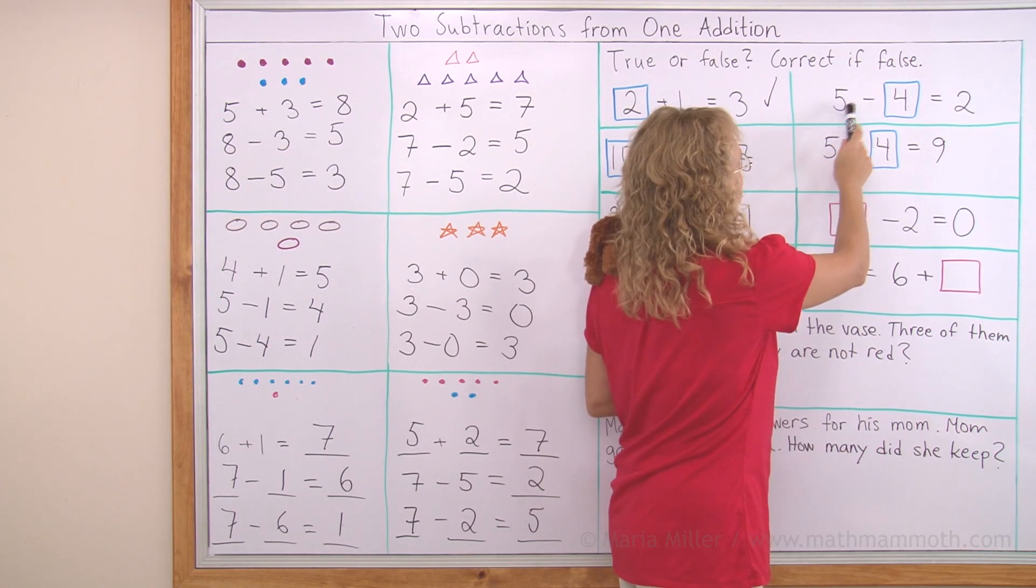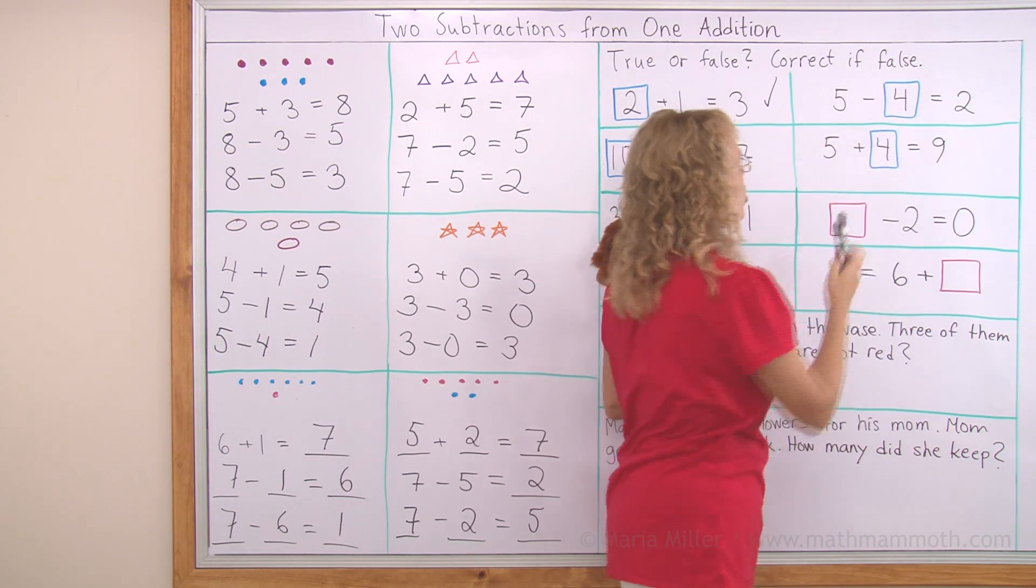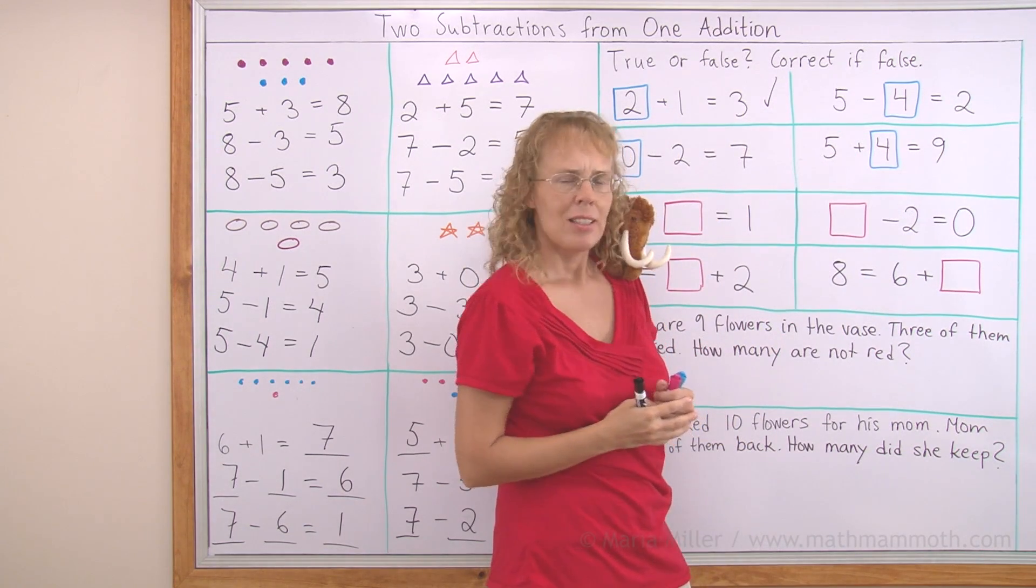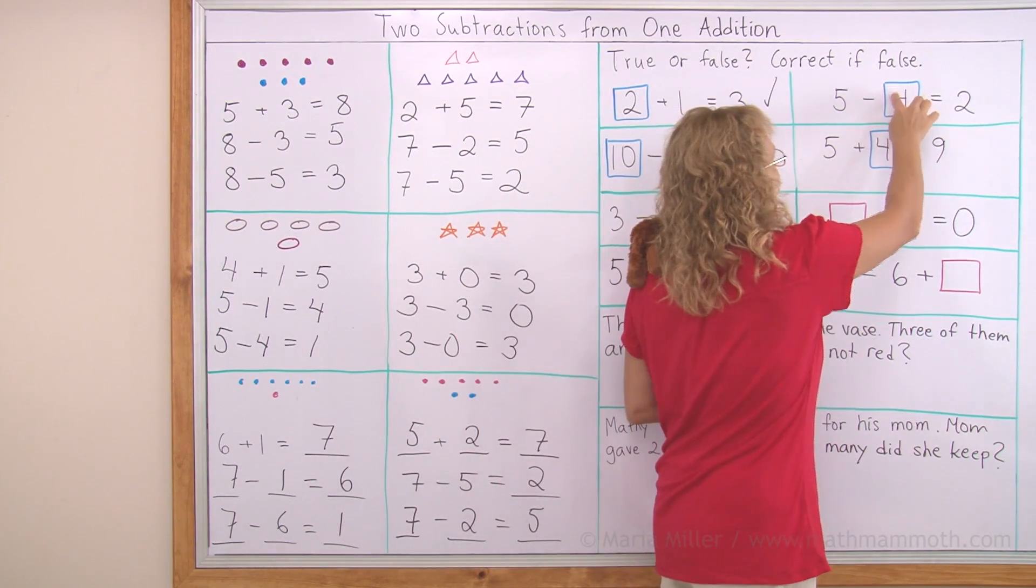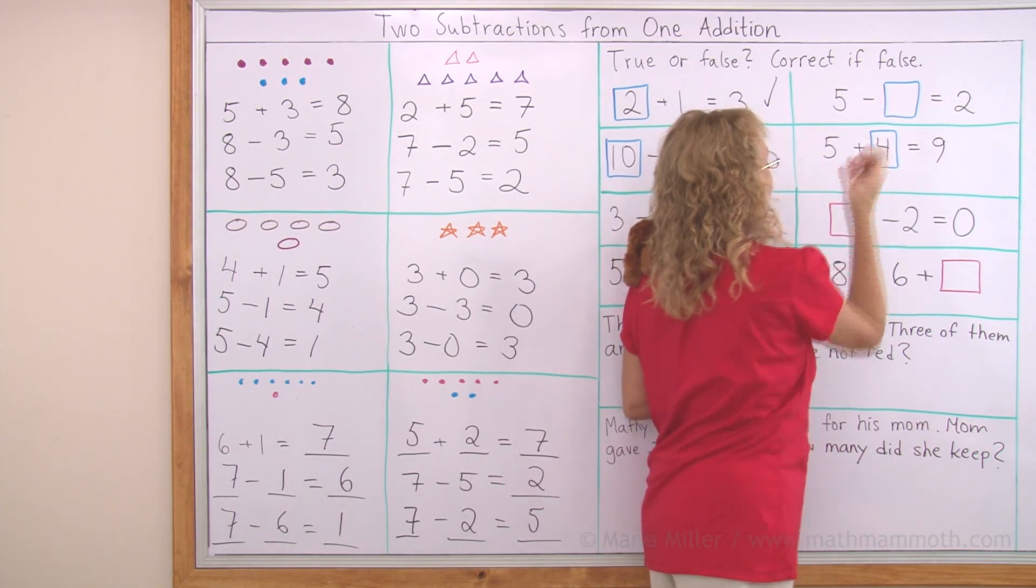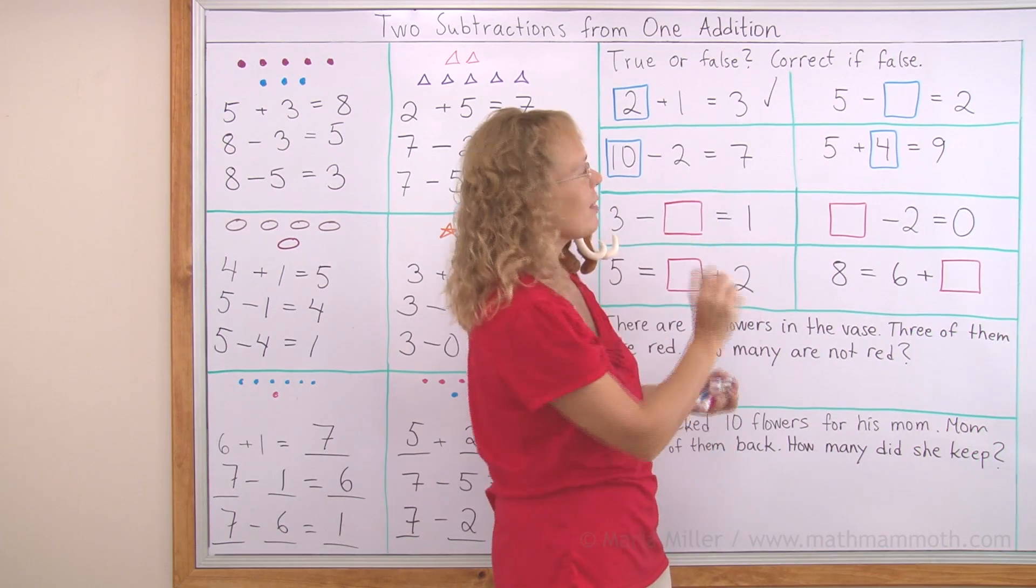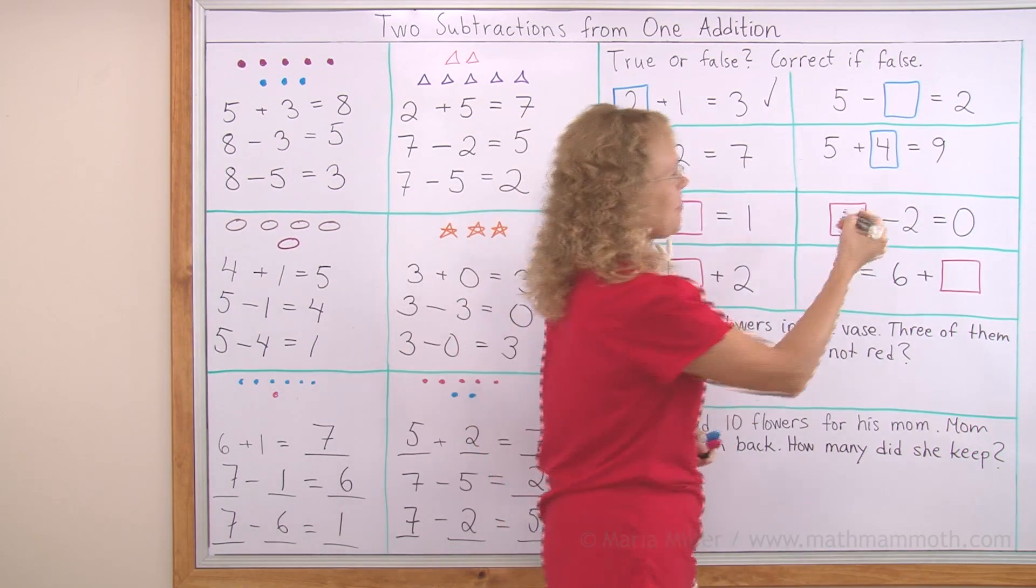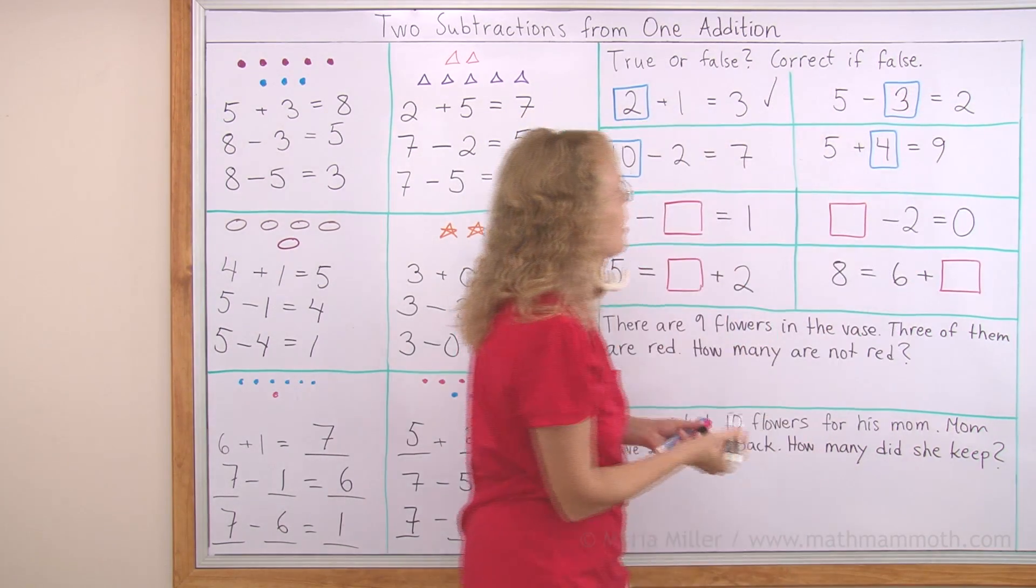Is this one true? Five minus four equals two? What do you think? No, that's not correct. That's false. Now we need to correct it. Let's erase. What number goes there? Three. Yes, five minus three equals two.